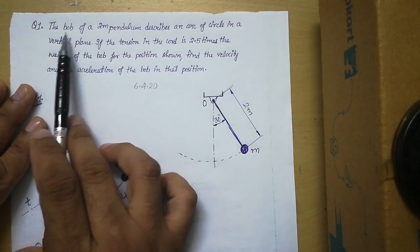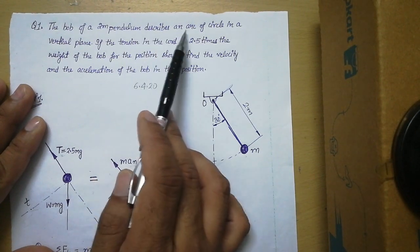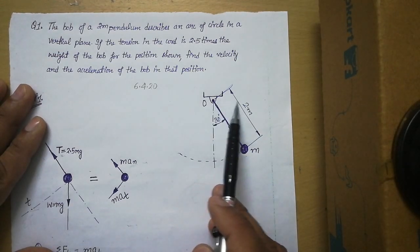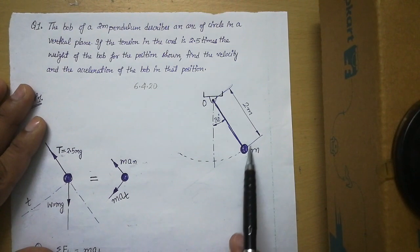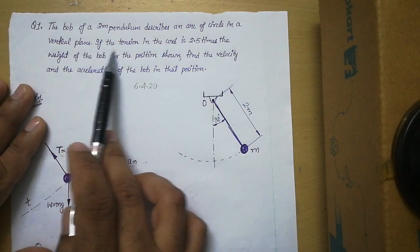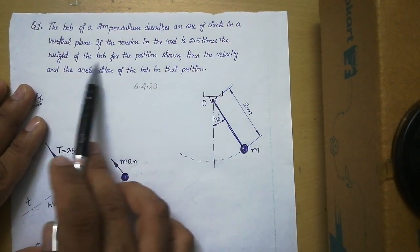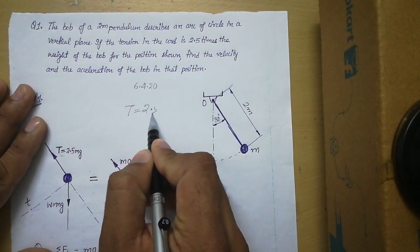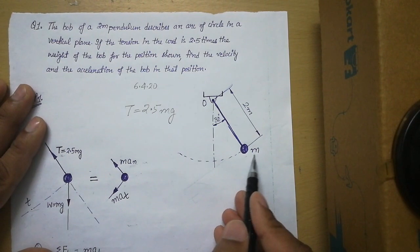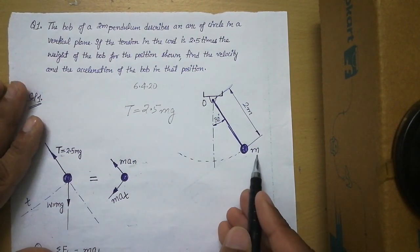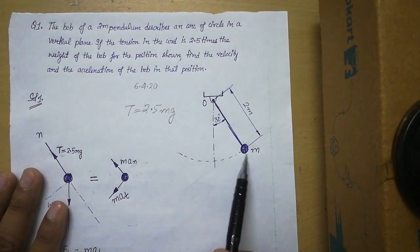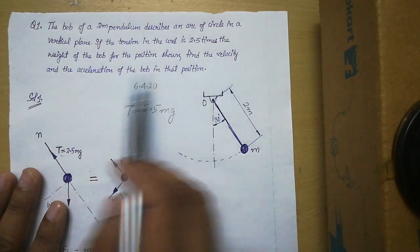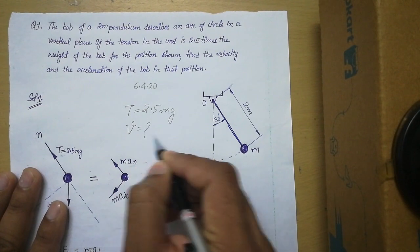Let us read the statement: the bob of a 2-meter pendulum describes an arc of a circle in a vertical plane. There is a bob acting like a pendulum with a chord length of 2 meters, moving along an arc of a circle. If the tension in the chord is 2.5 times the weight of the bob — let us call it mg — find the velocity and acceleration of the bob in that position.